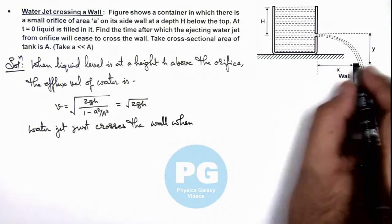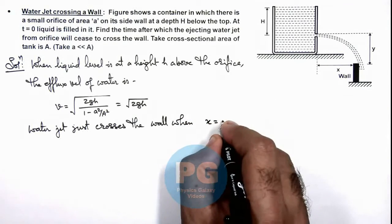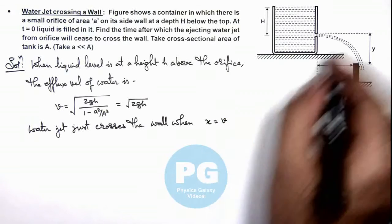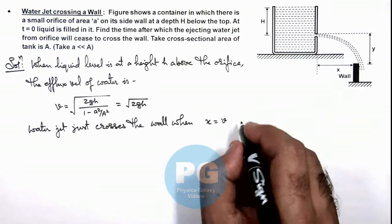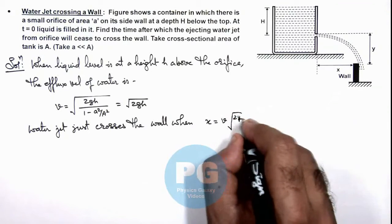We can write the range of water jet is equal to efflux velocity multiplied by time taken to fall by a distance y, that can be written as root(2y/g).